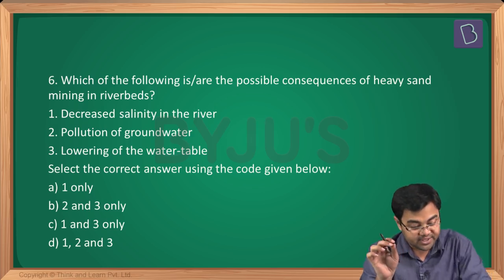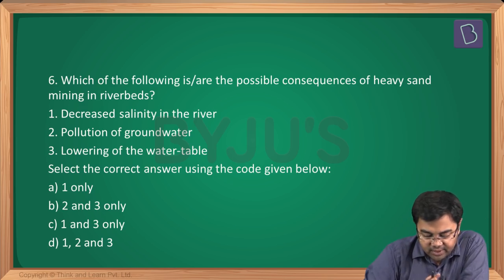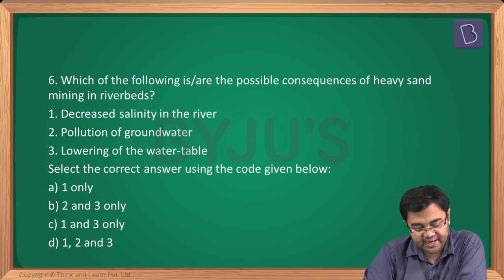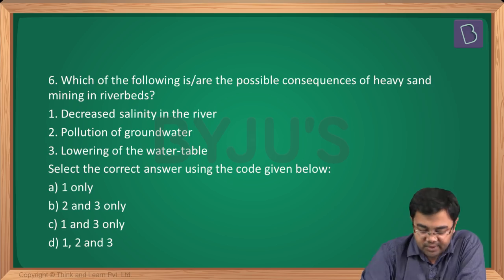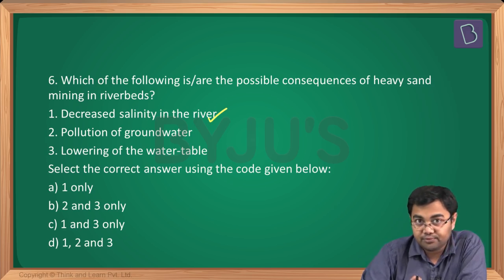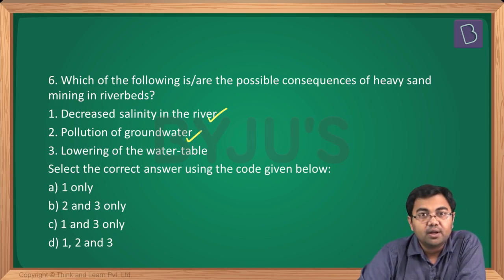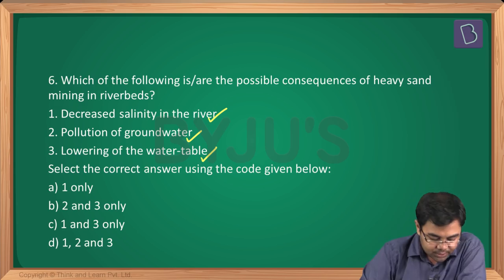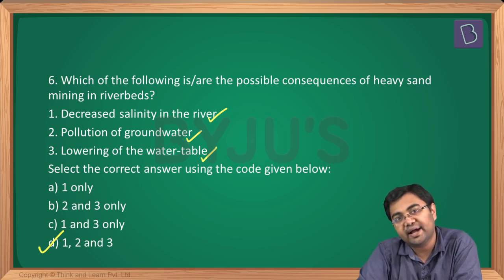Question number six asks: which of the following are possible consequences of heavy sand mining in riverbeds? Decreased salinity in the river — this is true. Pollution of groundwater — this is true. Lowering of the water table — this is also true. So the answer is 1, 2 and 3.